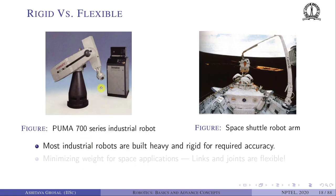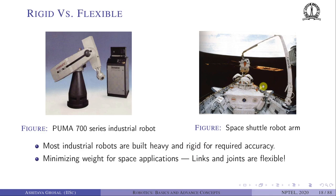Regarding rigid versus flexible robots: an industrial PUMA 700-series robot is very heavy and rigid because vibration must be minimized to achieve accurate tip positioning. In contrast, the space shuttle arm is extremely flexible to minimize weight, since weight carries a heavy penalty for space applications. The links are so flexible that testing on Earth must be done in a swimming pool where the arm can float, because in normal gravity it would simply bend under its own weight.